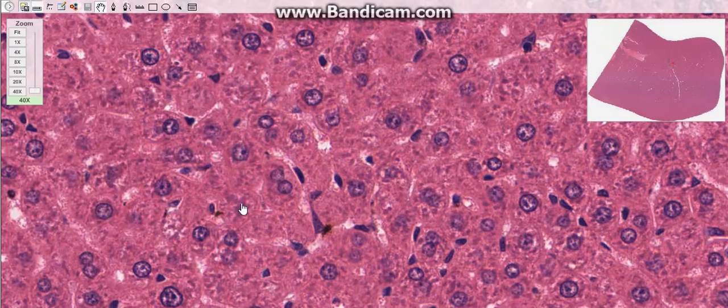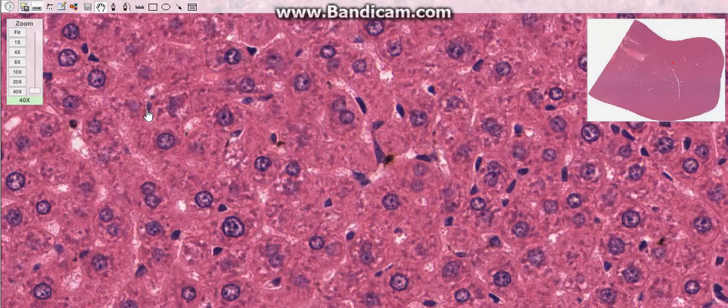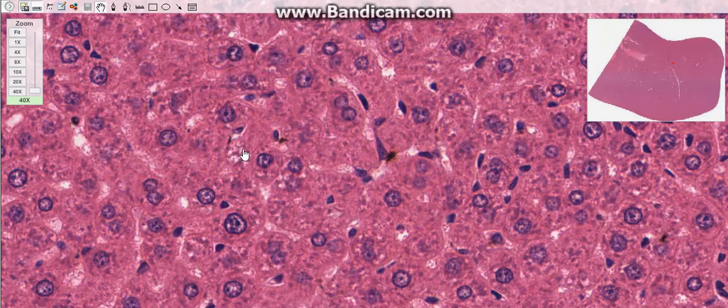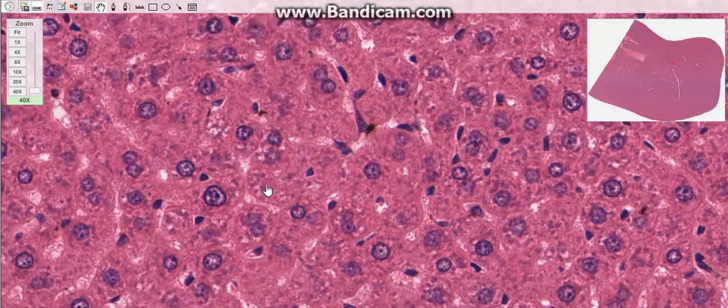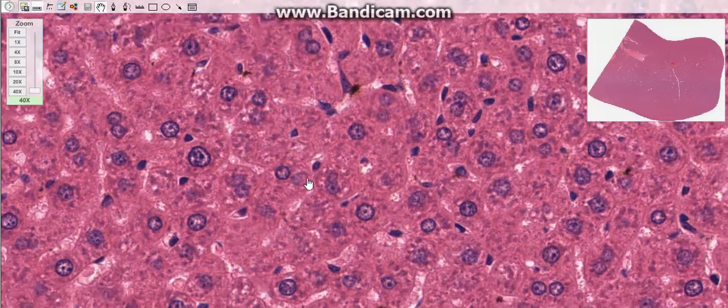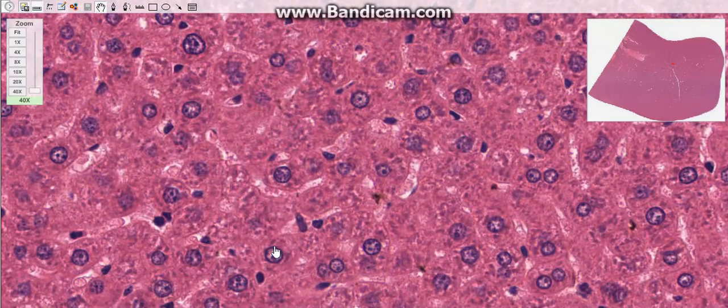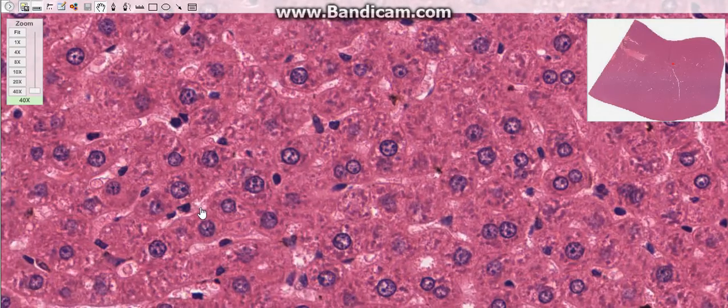The fourth type is the pit cells. They are hepatic natural killer cells that are located in the liver sinusoids where they adhere to endothelial cells. Pit cells are involved in killing metastasized tumor cells and they help in the elimination as well.